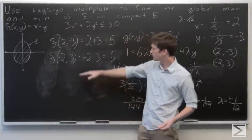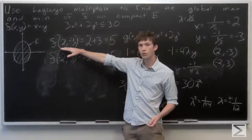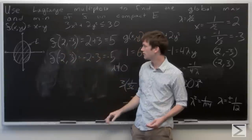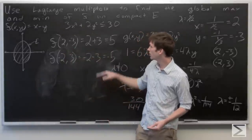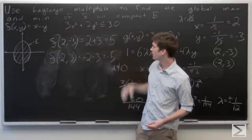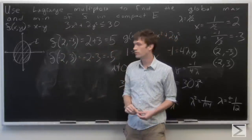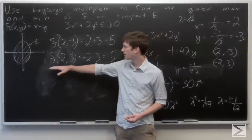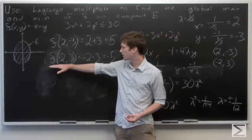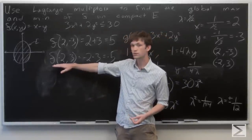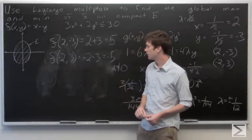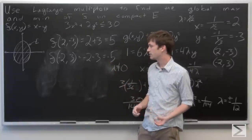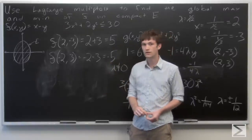At our critical point x = 2, y = -3, f attains a value of 5. At our point x = -2, y = 3, we get f equal to -5.